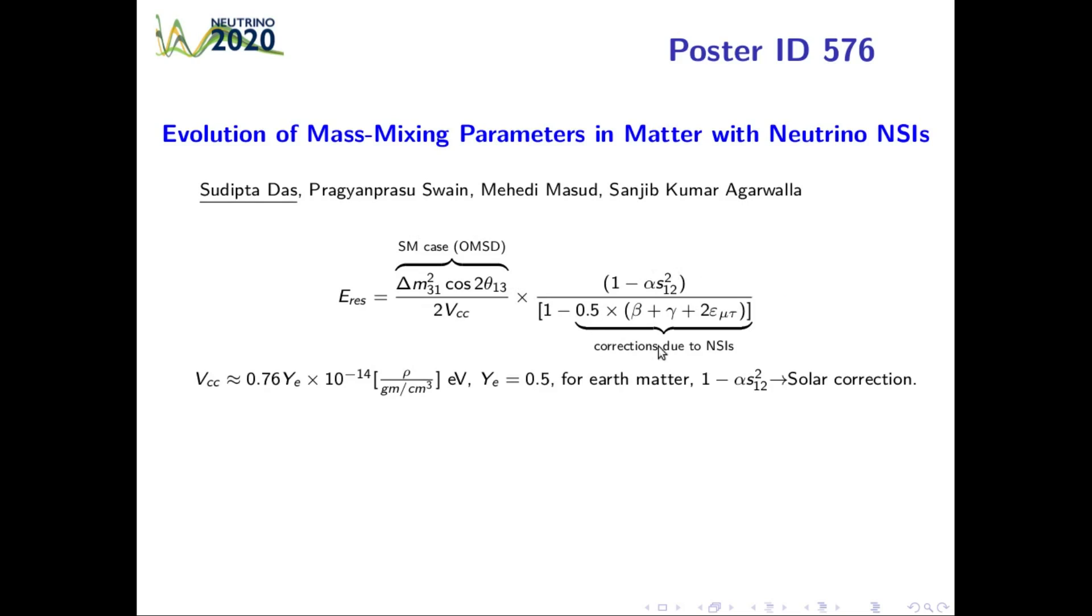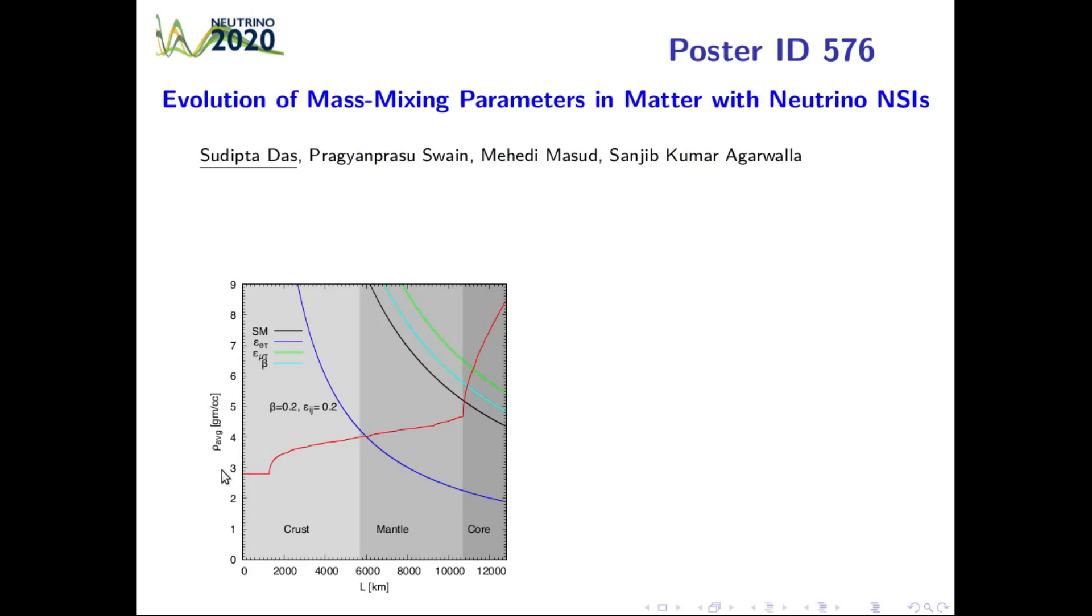Finally, we find out the required baseline length and neutrino energy to have maximal matter effect, which in turn maximizes nu_mu to nu_mu transition probability in one mass scale dominance approximation in presence of NSI. It is observed that epsilon_e_tau reduces the required baseline length from mantle-core boundary to near crust-mantle boundary.